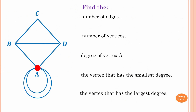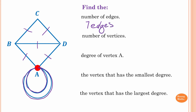For the last one, pause the video and try it yourself. To find the number of edges, count from A: there's one loop counting as one edge, then another one — two, three, four, five, six, seven — so we have seven edges. The number of vertices, counting the corners: one, two, three, four — so four vertices.